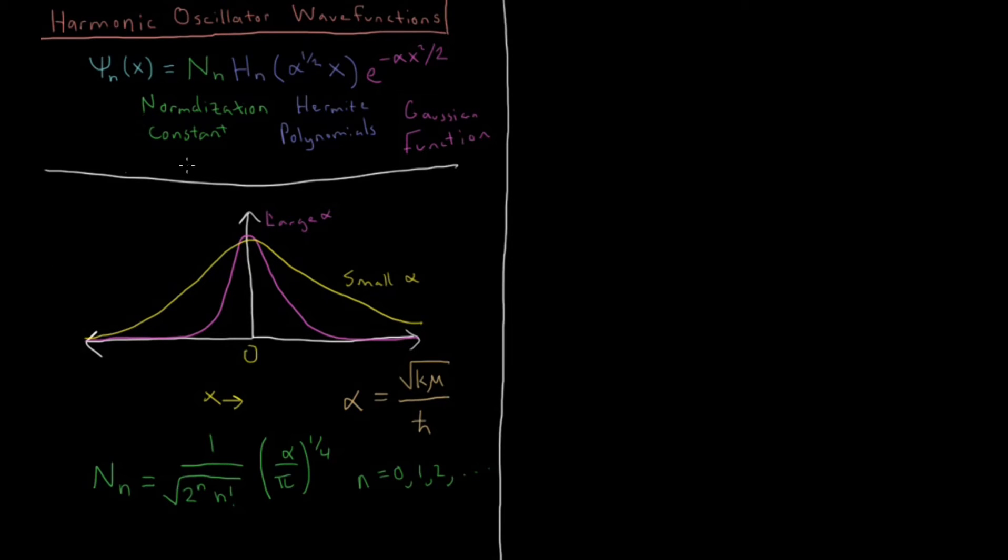Then lastly, let's look at these Hermite polynomials. So we notice that the argument we're giving to these polynomials is alpha to the 1 half times x. And we can give a name of the Greek letter xi to this variable, calling that alpha to the 1 half x.